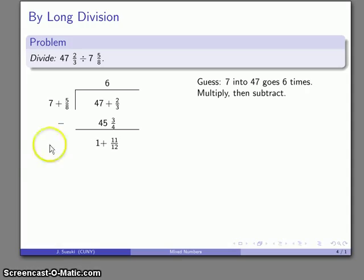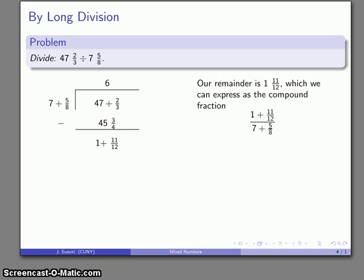And the thing that's worth noting at this point, the remainder is less than the divisor. And so I can express the quotient as 6 and the compound fraction remainder over divisor. So there's my remainder, that amount.